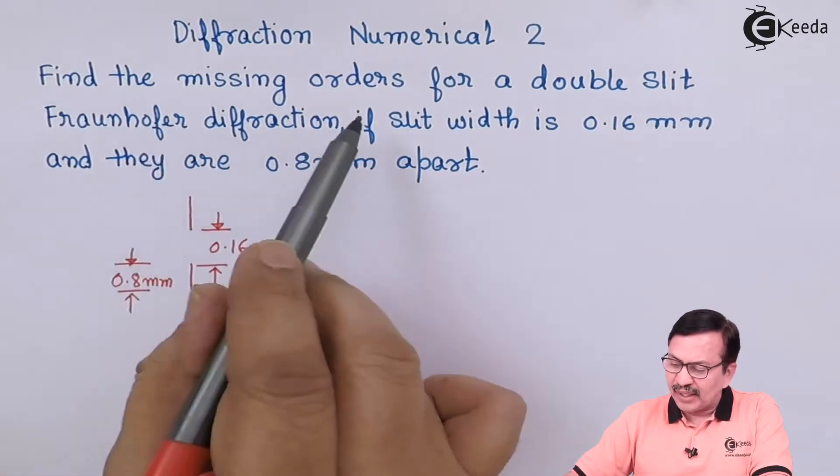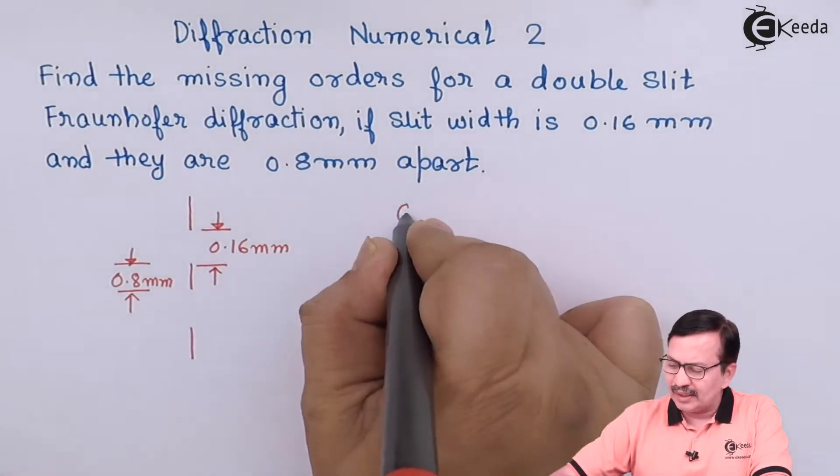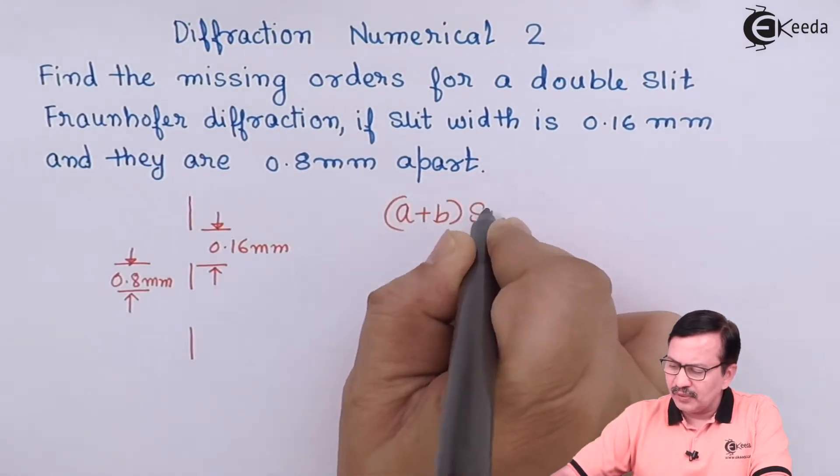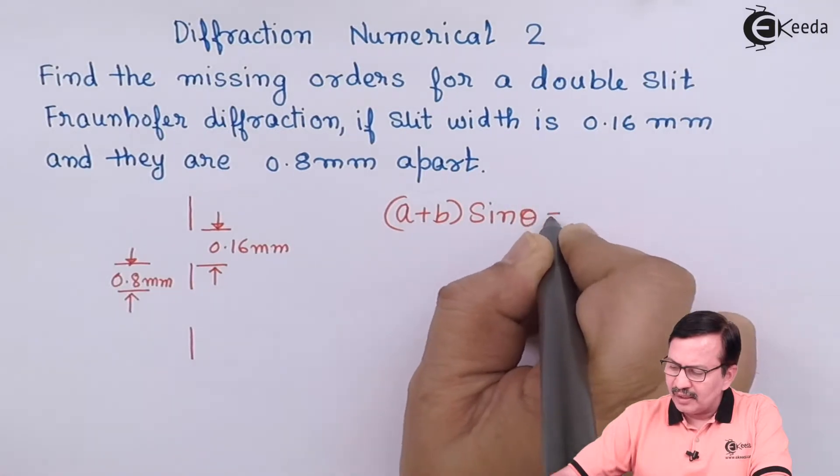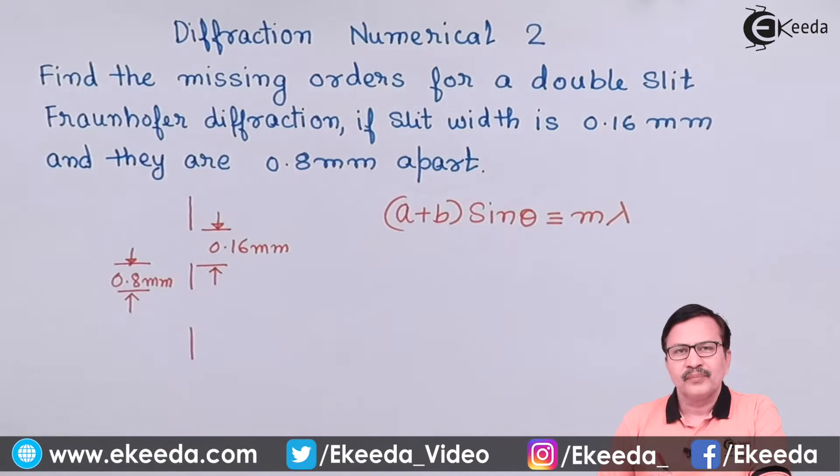First of all let us find out the expression for the missing orders. We know that from the diffraction equation for our double slit what we are going to have is a plus b into sin of theta is equal to n into lambda. So this is for the maximas.